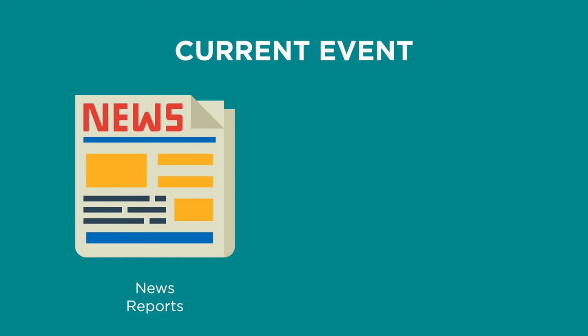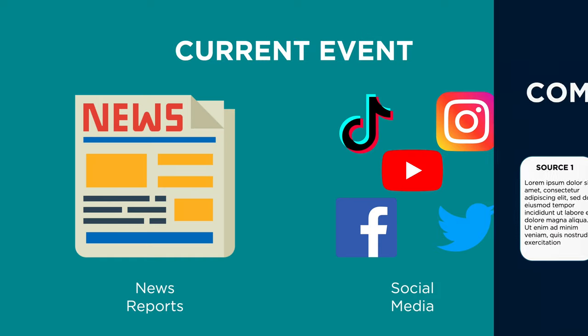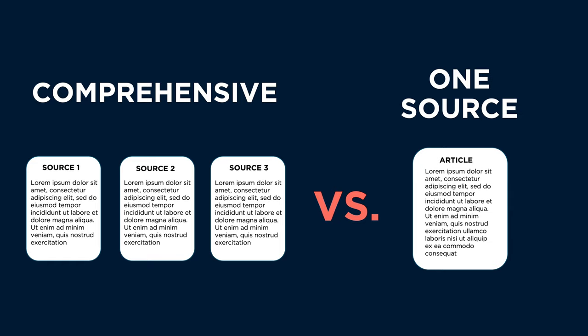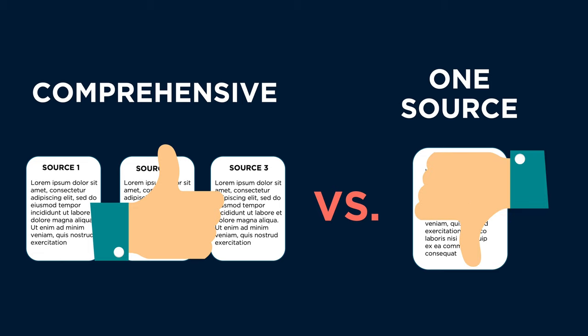Let's say you're trying to understand a current event. When researching the current event, you might look at anything from news reports to people's reactions on social media. Looking at several different types of sources helps you understand the event comprehensively instead of basing your reactions only on one source.